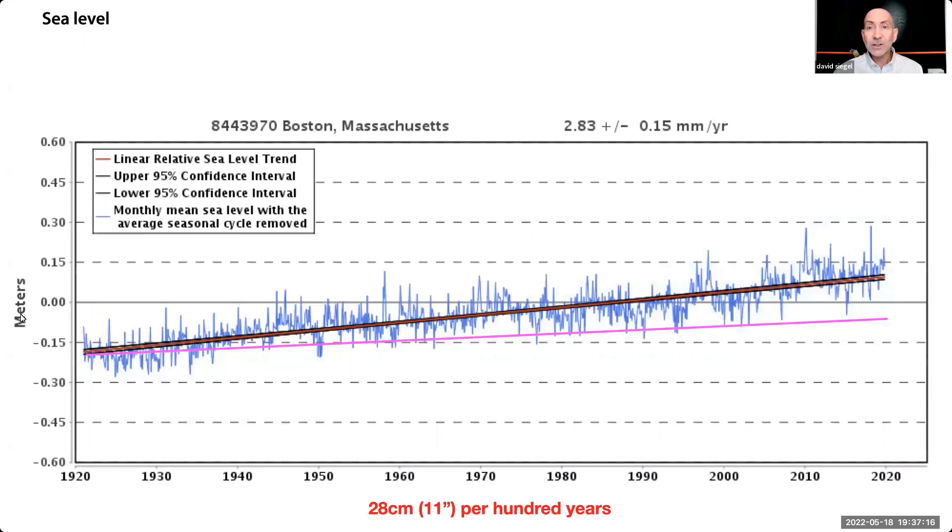For sea level, let's look at the data from the tide gauge in Boston. It shows a rise of 30 centimeters in 100 years. However, we know the East Coast from New York to Boston is sinking about 15 centimeters per century, and that gives an actual sea level rise of 15 to 20 centimeters per century, and I've shown that here in pink.